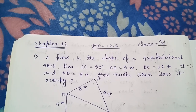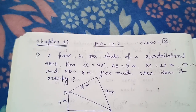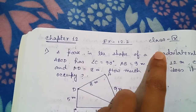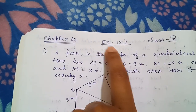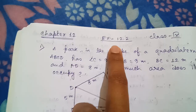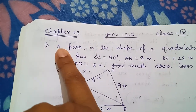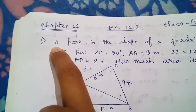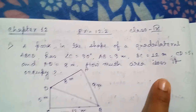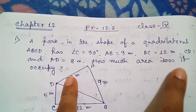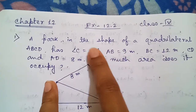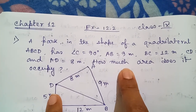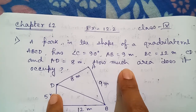Hello students, welcome back to my channel. Today I'm going to do Chapter 12, that is Heron's Formula, Class 9, Exercise 12.2. In the previous session I have done Exercise 12.1. I have written the question over here so that if you don't have the book you can get the question here. Please download the PDF of NCERT books.